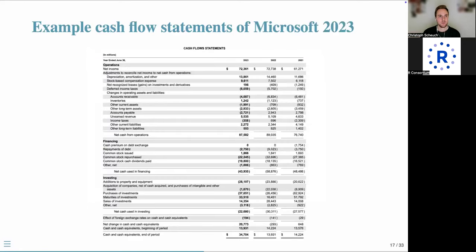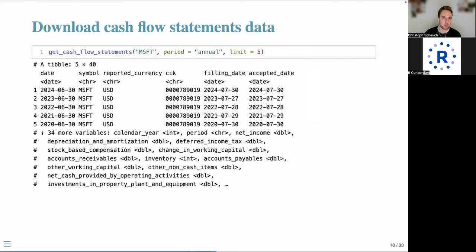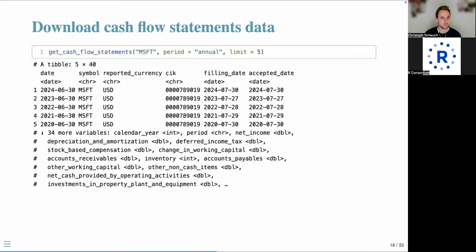For completeness, here is an example cash flow statement from Microsoft for 2023. You can also download cash flow statements using get_cash_flow_statements from our package, plugging in the symbol, period, and limit. This returns 40 columns, with some items overlapping with the income statement.